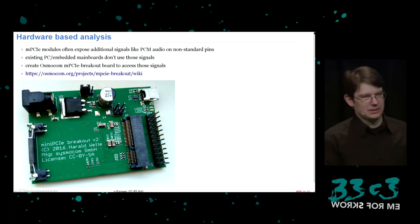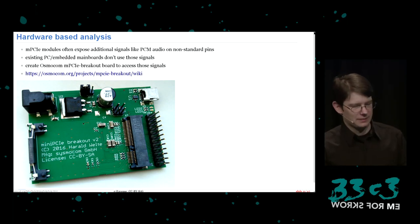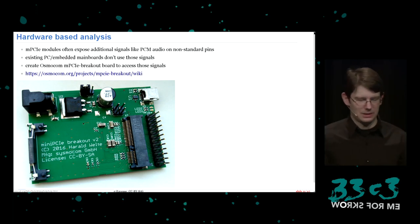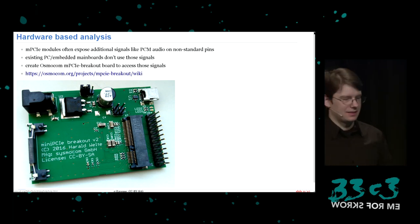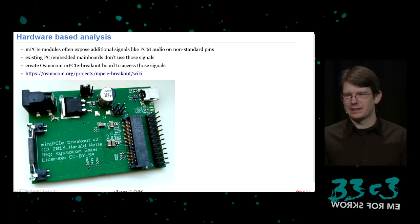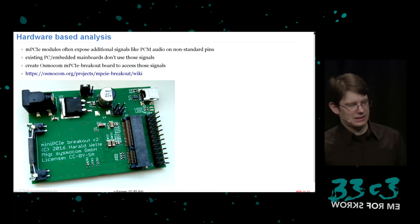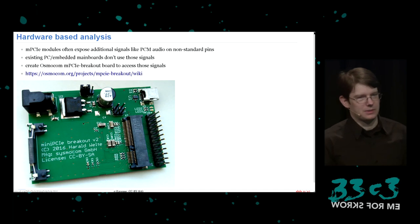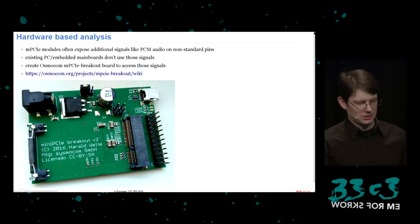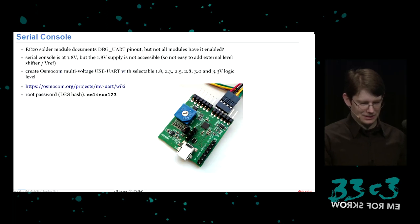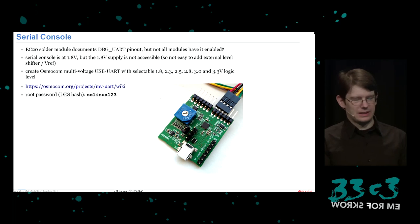Many mini PCIe cellular modem modules have additional signals on undocumented pins — PCM audio, UART, etc. Soldering wires to mini PCIe pitch is not convenient, so I created a breakout board — an open hardware project with published schematics and design files. The EC20 solder module documents debug UART pins at 1.8V, but not all modules have it enabled. We bought modules from three different suppliers with different firmware versions; some had it enabled, some not.